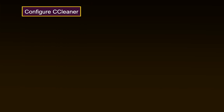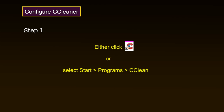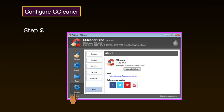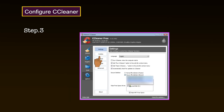Now let us see how to configure CCleaner. Before you begin using CCleaner, it should be configured to securely delete all temporary files. Step 1: Either click on the icon or select Start > Programs > CCleaner to activate the following screen. Step 3: Click the Settings option to activate the Settings pane. The Settings pane lets you choose the language you are most comfortable working in and determine how CCleaner will delete temporary files and wipe drives.